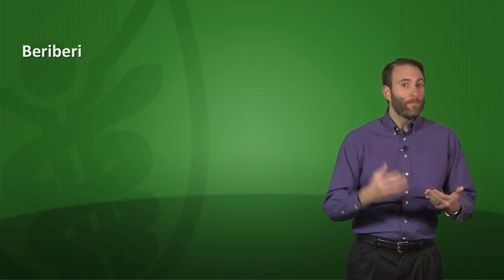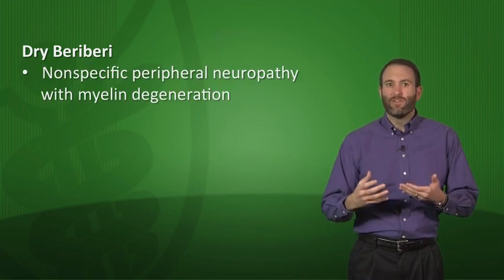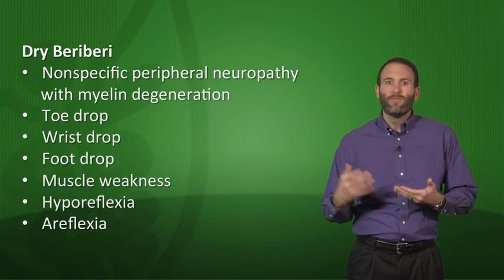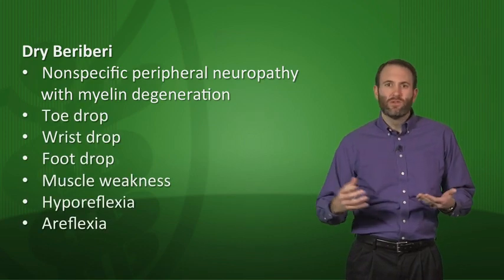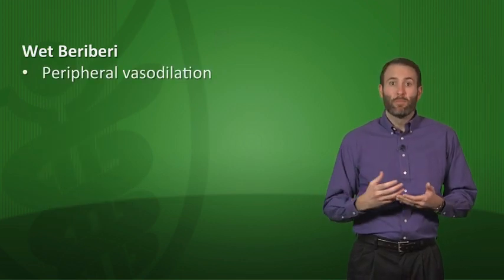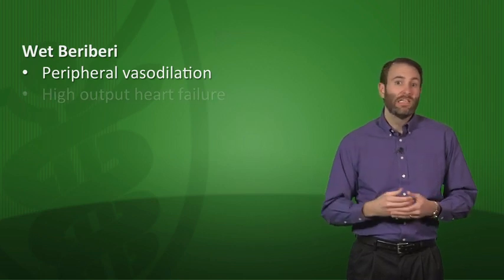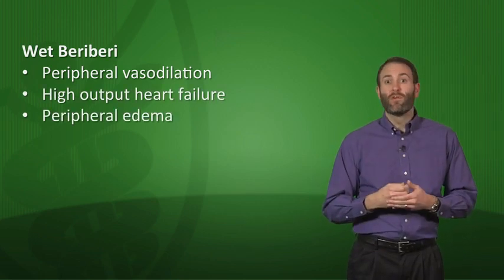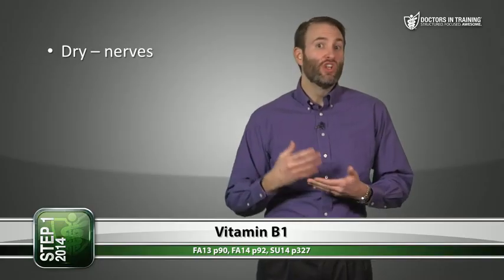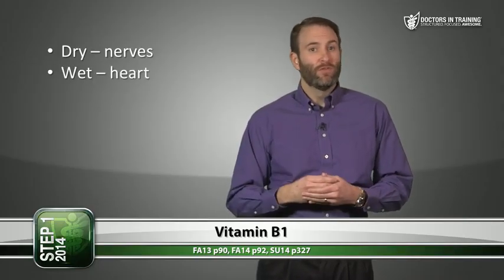Beriberi is described as either wet or dry beriberi. Dry beriberi symptoms include peripheral neuropathy with myelin degeneration, toe drop, wrist drop, foot drop, muscle weakness, and hyporeflexia or areflexia. Wet beriberi involves peripheral vasodilation leading to high-output heart failure, peripheral edema, and cardiomegaly. So dry beriberi involves the nerves, and wet beriberi involves the heart.